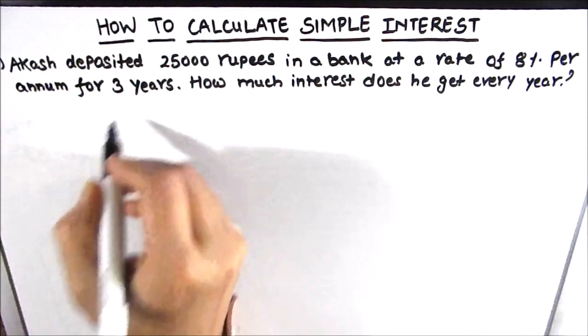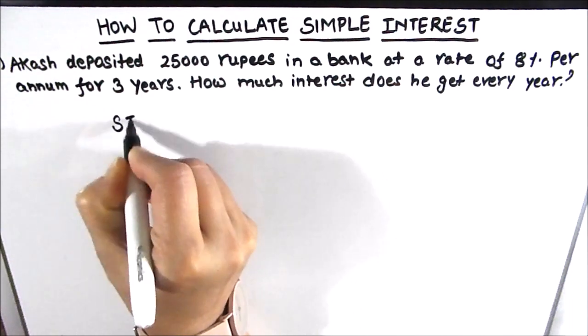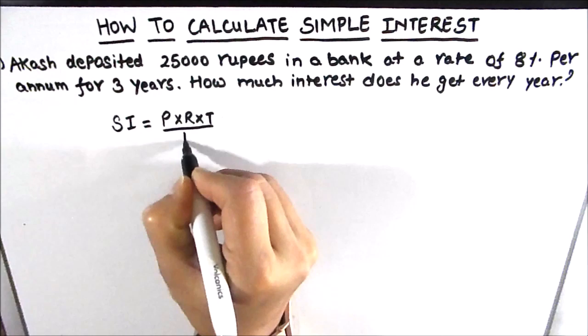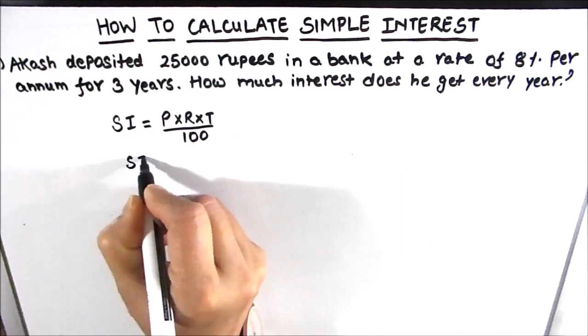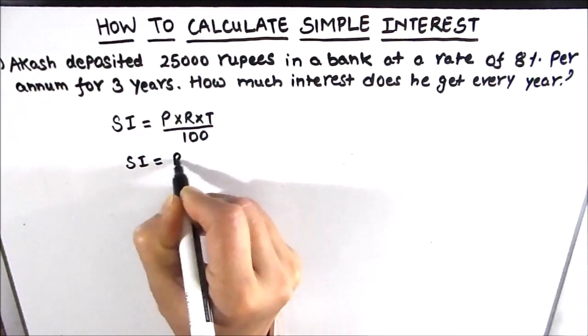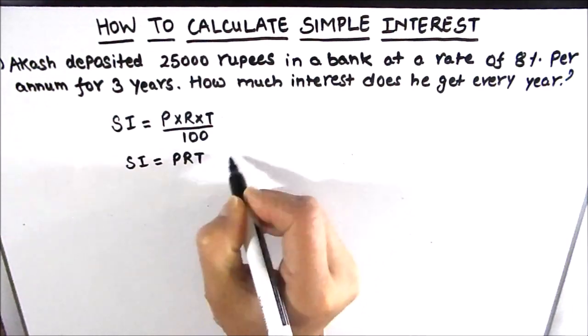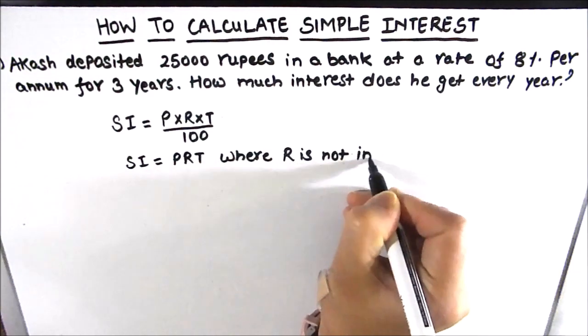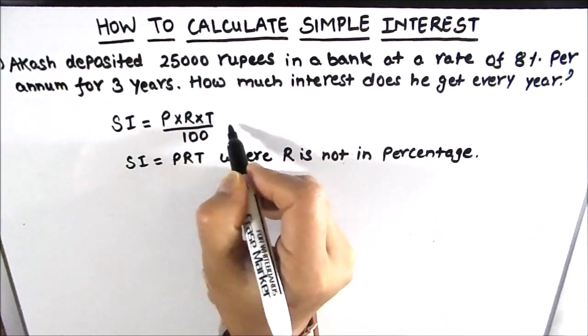The formula for calculating simple interest is P times R times T divided by 100, or it is also written as P times R times T where R is not in percentage. Here in this formula, R is in percentage.